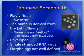Following an infectious mosquito bite, the initial viral replication occurs in the local and regional lymph nodes. Viral invasion of the central nervous system then occurs, probably via the blood.